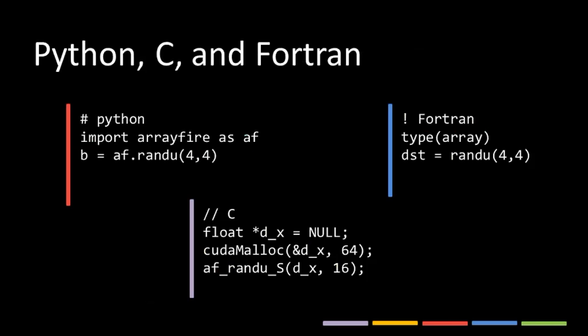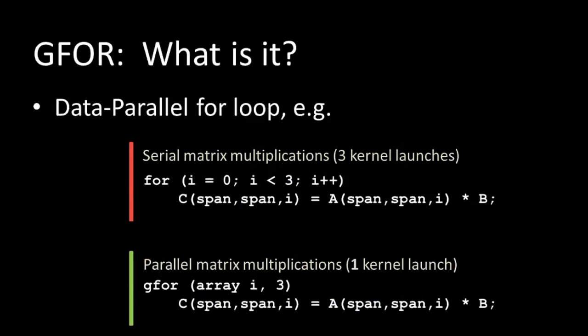As shown in that C++ example, Python is supported, C is supported, and Fortran is supported. Each has its own syntax and its own way to initialize ArrayFire, and all are available and documented on our website. With ArrayFire, you get a very broad set of functions from image processing to signal processing to statistics and math functions, and you also get advanced features like the gfor loop.